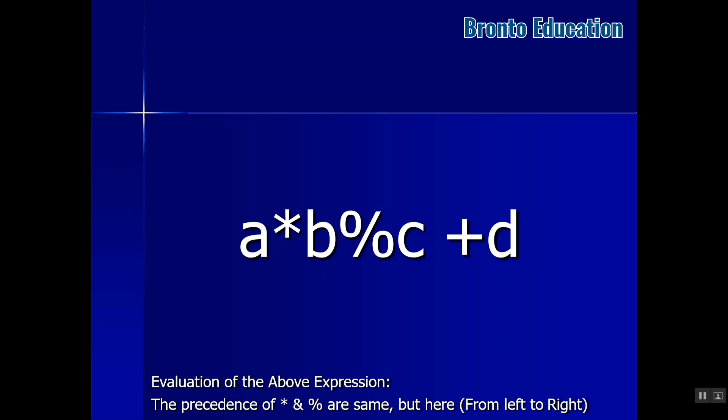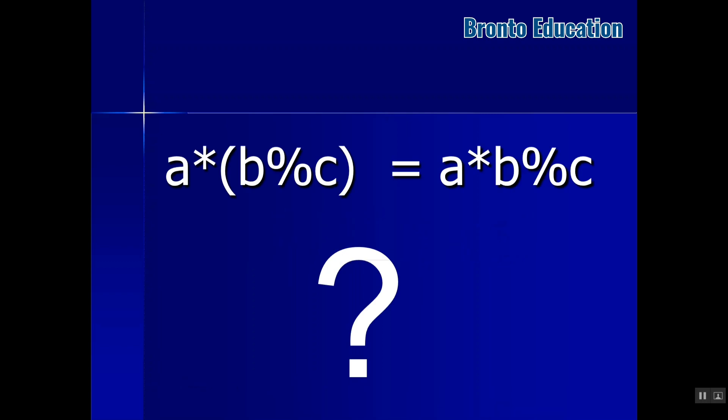How about this one? Are they equal? Of course not, because here the presence of parentheses. First it will calculate b modulus c, then it will multiply by a. But in the right hand side, first a will be multiplied by b, then modulus of c. So there's much difference.